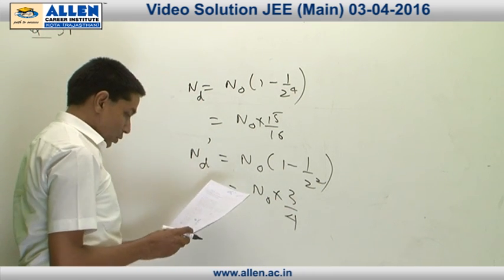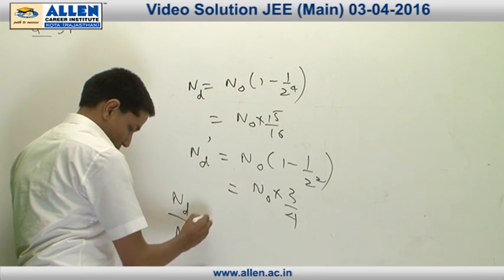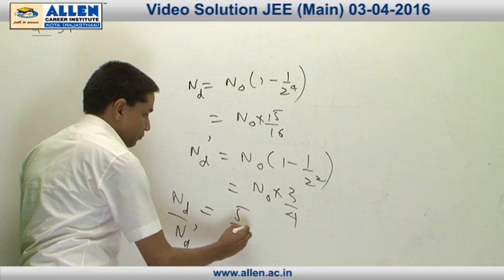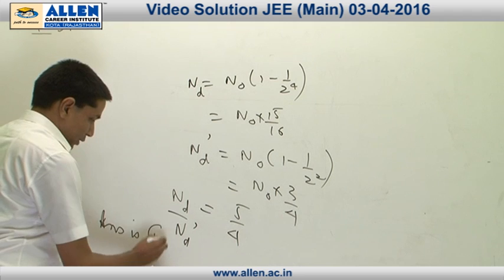The ratio if I see Nd upon Nd dash, this happens to be equal to 5 by 4. So, the answer is 1.